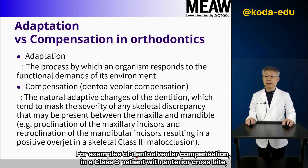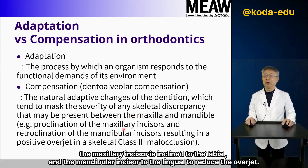For examples of dental alveolar compensation: in a Class 3 patient with anterior crossbite, the maxillary incisor is inclined to the labial and the mandibular incisor to the lingual to reduce the overjet.